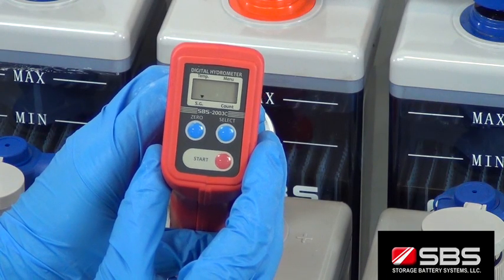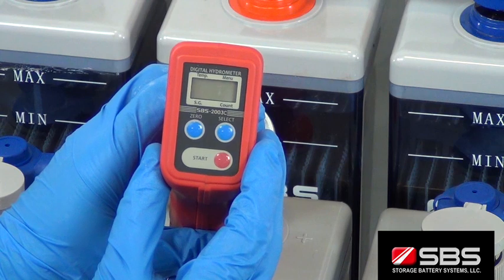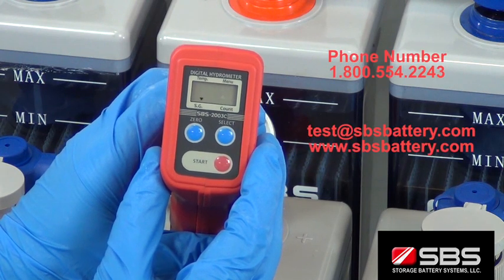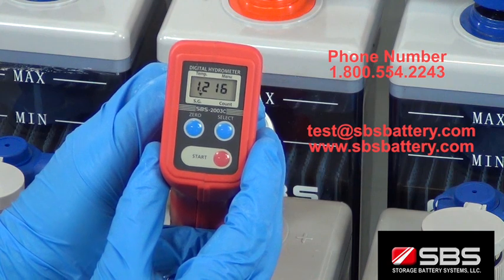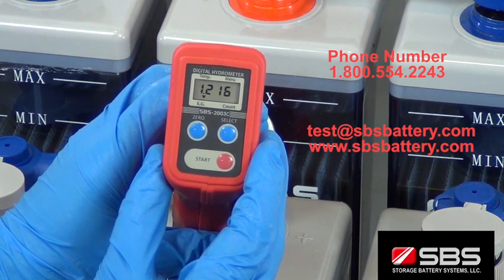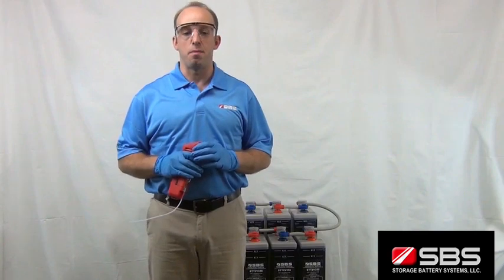Order your SBS 2003 digital hydrometer today by emailing test at sbsbattery.com or check out our website at www.sbsbattery.com. Storage Battery Systems, your source for testing equipment.